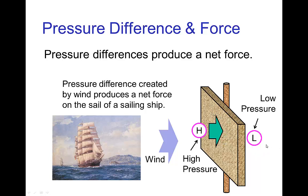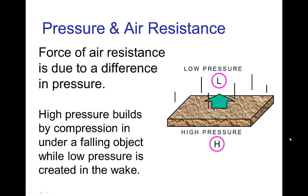That pressure difference means we have a net force, and that is what moves the sail. The same thing happens if we think about air resistance. We have an object moving through air — the motion builds up high pressure on one side, and in the wake, low pressure develops. It's that difference of pressure that results in the air resistance force.